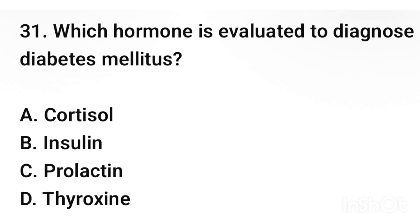Question number 31. Which hormone is elevated to diagnose diabetes mellitus? The correct answer is option B: Insulin.